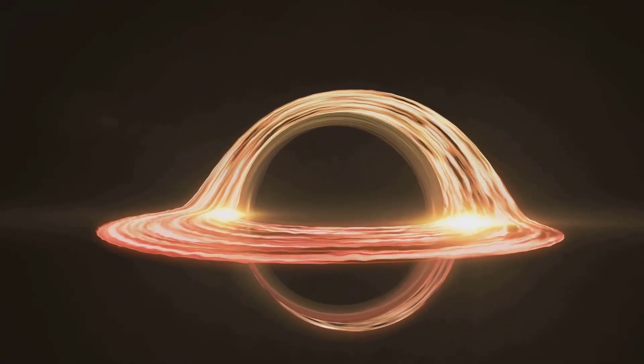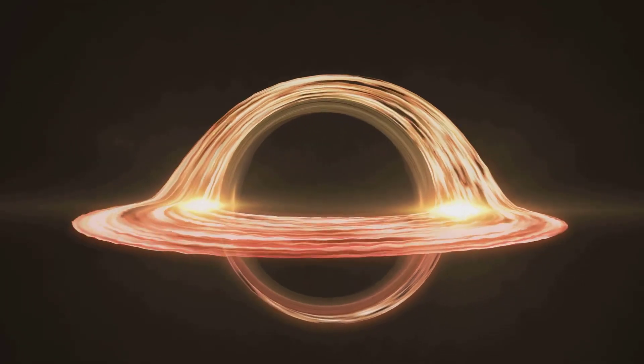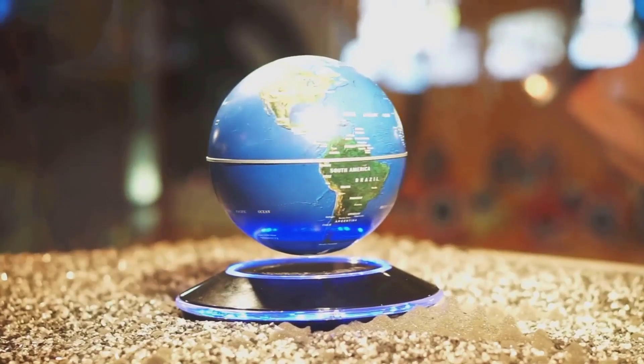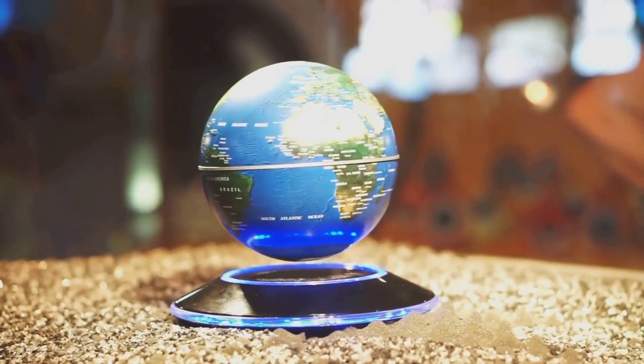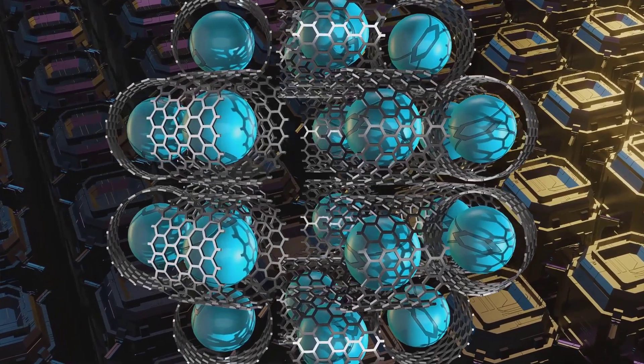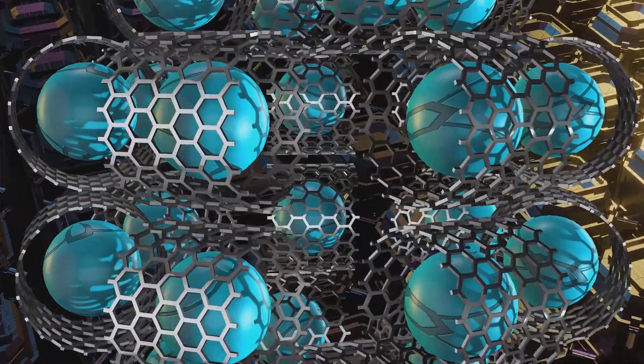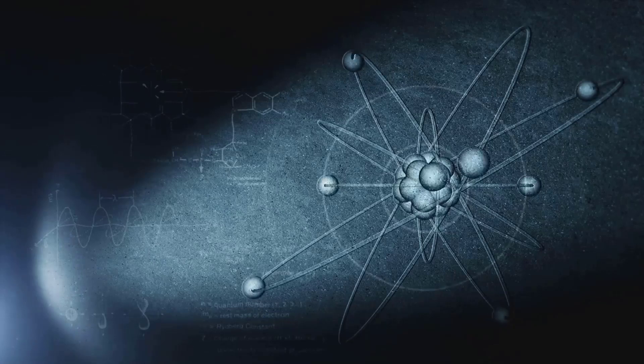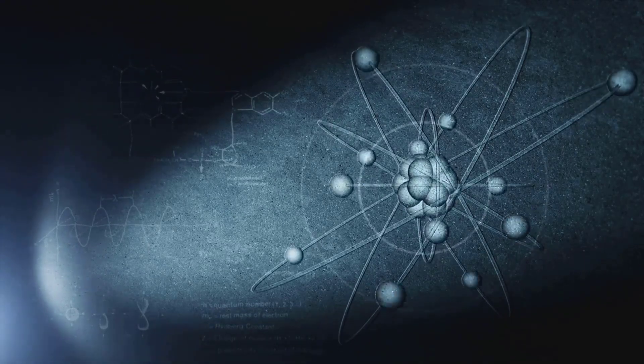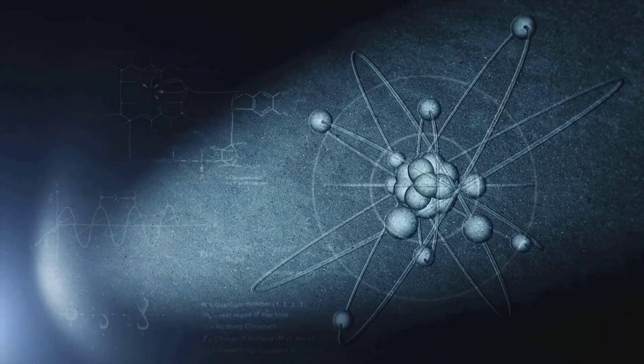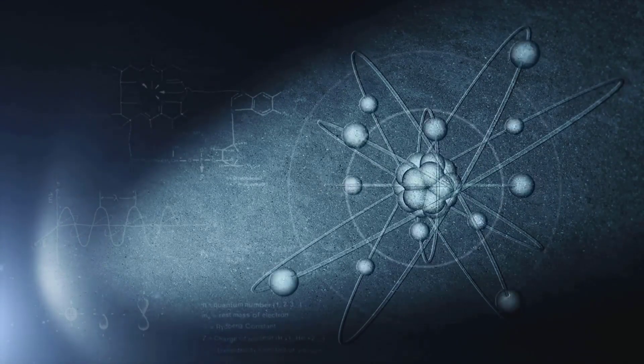In condensed matter physics, where the collective behavior of trillions of atoms gives rise to astonishing phenomena, quantum spin liquids stand out as enigmatic rebels, challenging the established order of magnetism. Classical spin models, with their neat arrangements of aligned or alternating spins, fail to capture the essence of these unconventional magnets. This defiance of classical expectations arises from the deep-seated principles of quantum mechanics, which govern the behavior of matter at the atomic and subatomic levels.